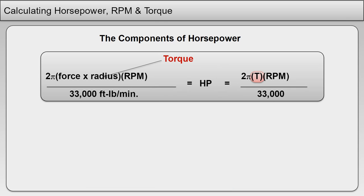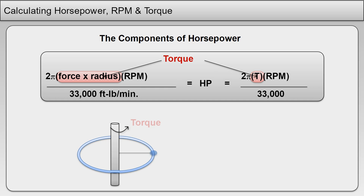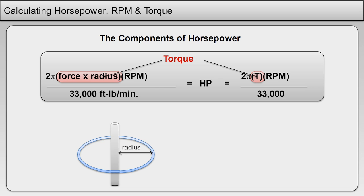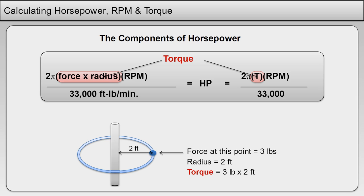Torque — T equals force times radius — is the twisting action developed from a rotating shaft. Force, usually expressed in foot-pounds or inch-ounces, is present at the radius, the distance from the center of the twisting action. If the force at this point is 3 pounds and the radius is 2 feet, torque equals 3 pounds multiplied by 2 feet, or 6 foot-pounds.